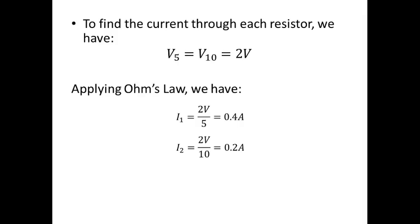Something to note: we can check this result with Kirchhoff's current law. The total current I was 0.6 amps, and that must equal the sum of I1 (0.4 amps) and I2 (0.2 amps), which confirms our answer.